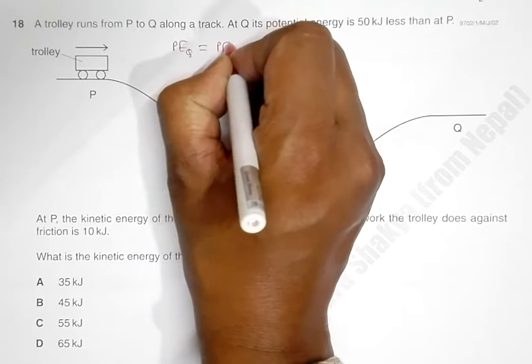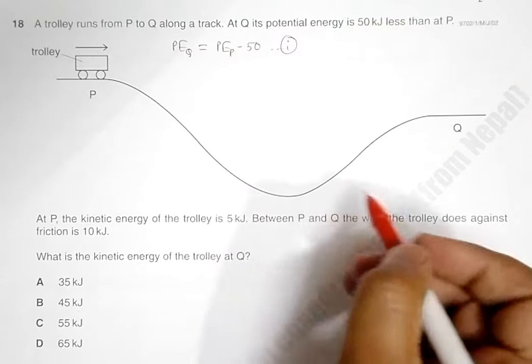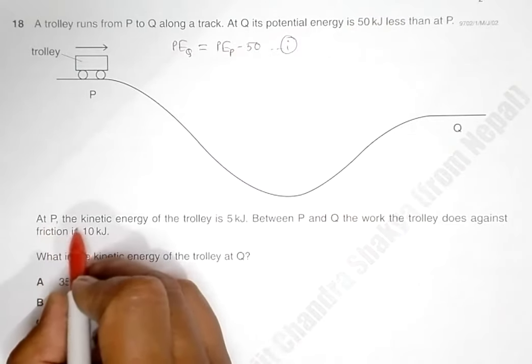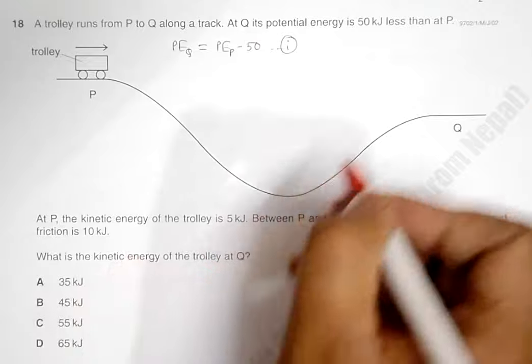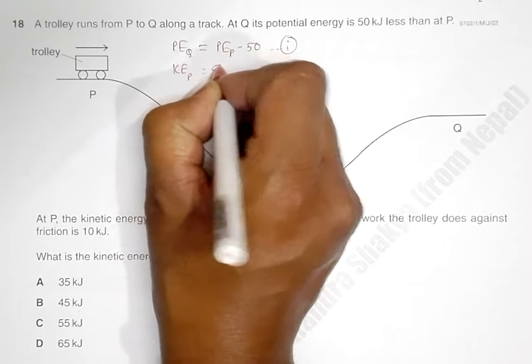At P, the kinetic energy of the trolley is 5 kilojoules. So KE of the trolley at P is equal to 5 kilojoules. I haven't written a unit here because all the quantities have the same unit.